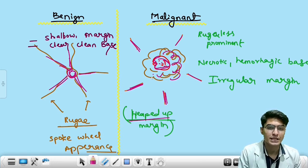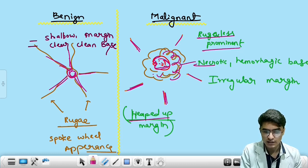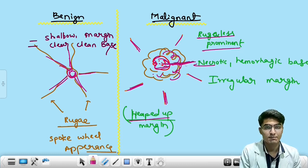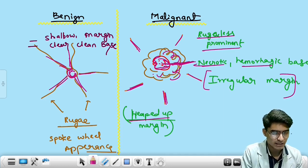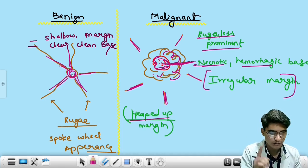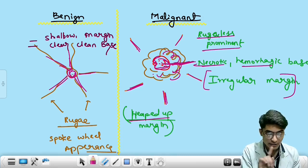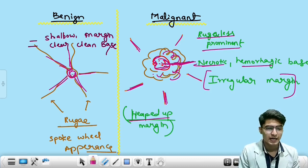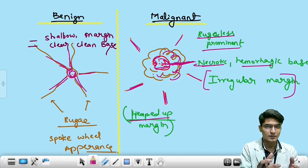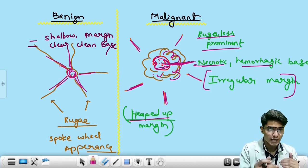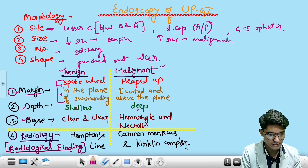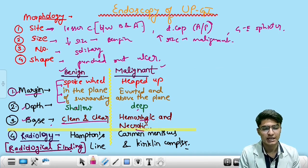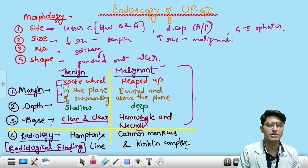In malignant ulcers, rugae are less prominent, the central area is necrotic and hemorrhagic, and the margins are irregular and everted. In the benign ulcer, we have a clear and clean base, margins are shallow and not indurated at the periphery. In malignant ulcers, there is outgrowth and elevation of induration above the plane of the mucosa. The base in malignant ulcers is hemorrhagic and necrotic — these are the gross findings observed on upper GI endoscopy.